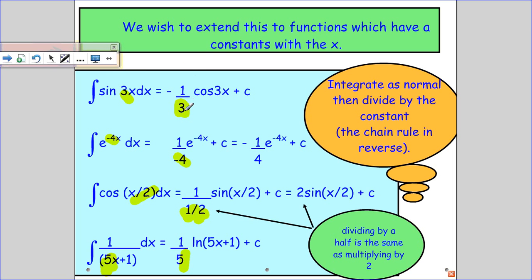then it must have cancelled with that 3 under here. So e to the minus 4x comes from 1 over minus 4. So you just put the minus there. Again, not forgetting the plus c's.